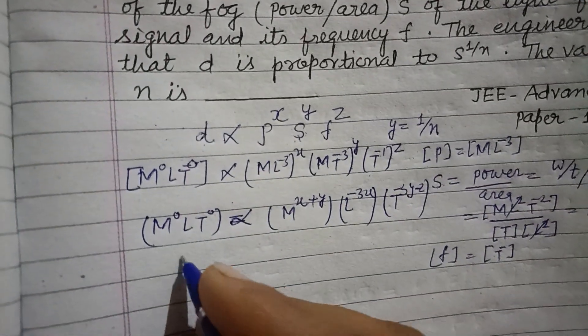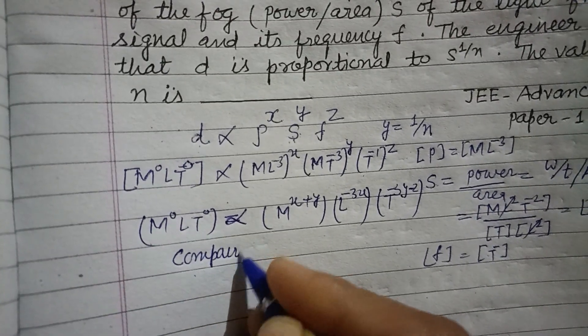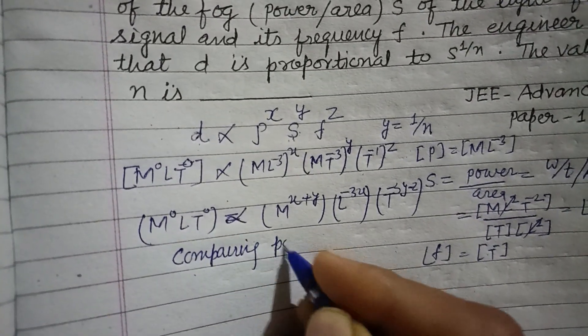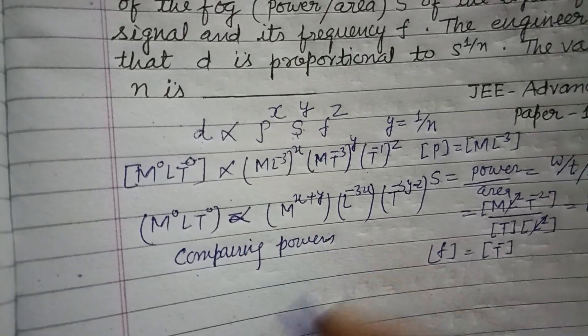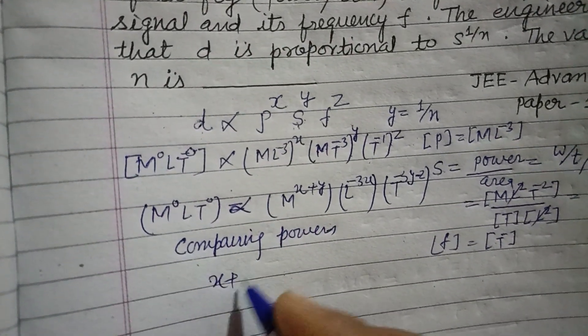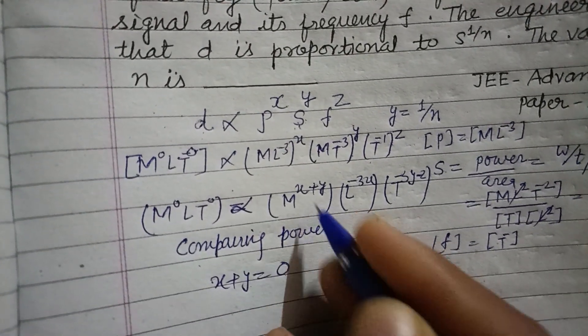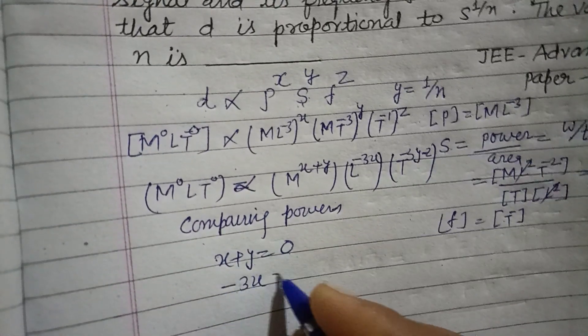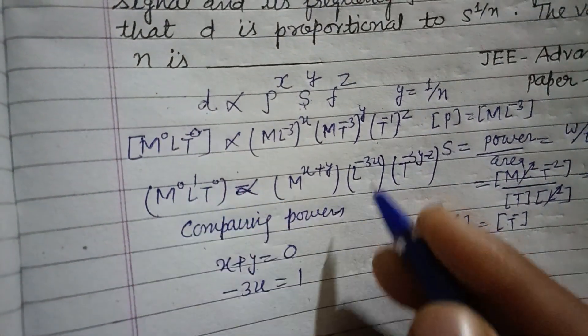Now comparing powers of same base, we have x plus y equal to 0, minus 3x equal to 1 because L is 1 here.